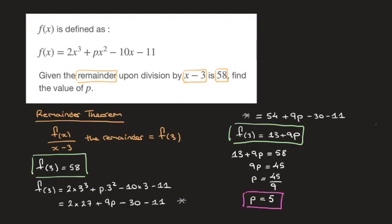And if needs be, we could even write that f(x) is equal to 2x cubed plus 5x squared minus 10x minus 11. And we're done.